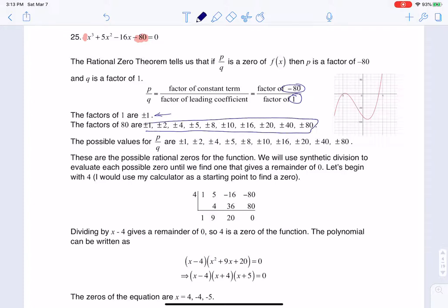If we're taking a look at this, these would be my Qs, these would be my Ps, and when I put them in ratio, I have that gigantic list.